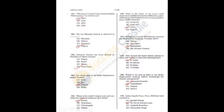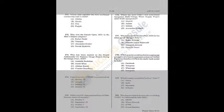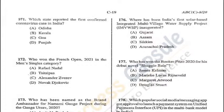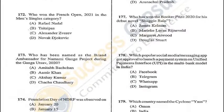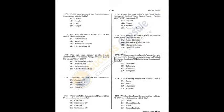Question 171: Which state reported the first confirmed coronavirus case in India? Kerala — B is the answer. Question 172: Who won the French Open 2021 in men's singles? Novak Djokovic — D is the answer. Question 173: Who has been named brand ambassador for the Namami Ganga project? Chacha Chaudhary — D is the answer. Q171 = B, Q172 = D, Q173 = D.